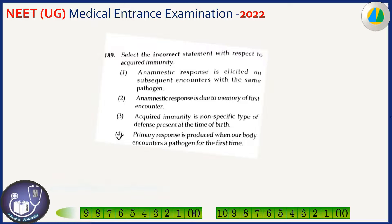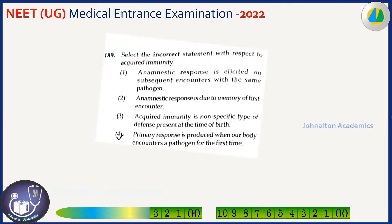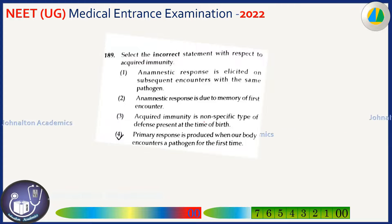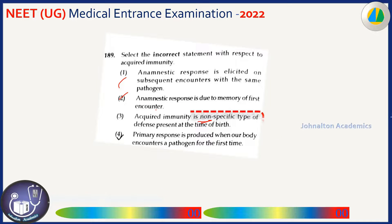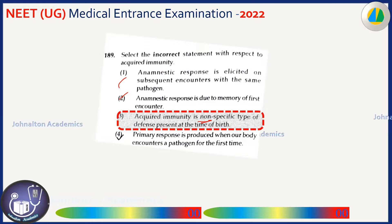Select the incorrect statement with respect to acquired immunity. The correct answer identifies the incorrect statement — so the option marked as correct here is the incorrect statement about acquired immunity.